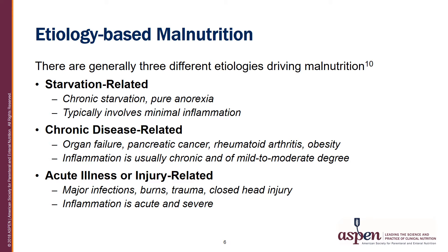Acute illness or injury-related malnutrition is typically seen in critically ill patients — those with major infections, severe sepsis, burn, trauma, or closed head injury. These patients have inflammation that is acute and severe.